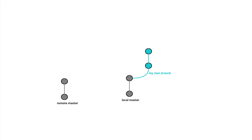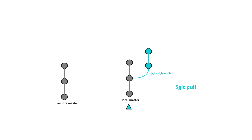In a real-life workflow: you have a remote master with two commits, you git pull to your local workstation, create a feature branch, and make changes. While you're working, other team members add features to the main branch, so your local branch falls out of sync and is behind the remote master. Once you're done, you check out master and run git pull to sync your local master with the remote.